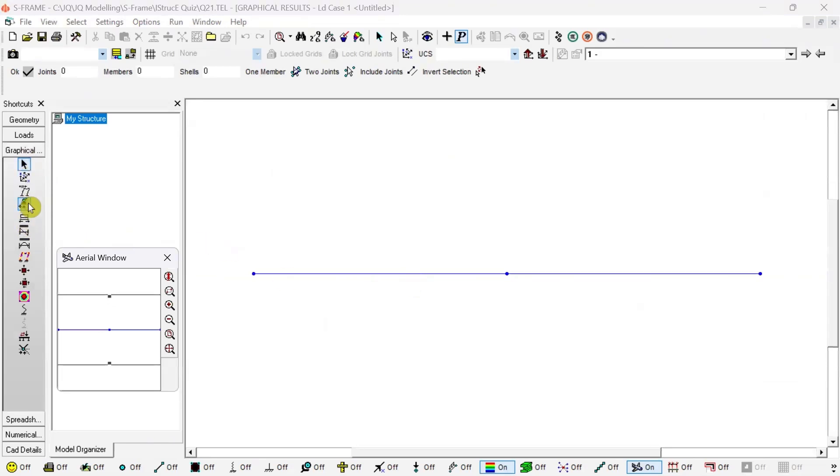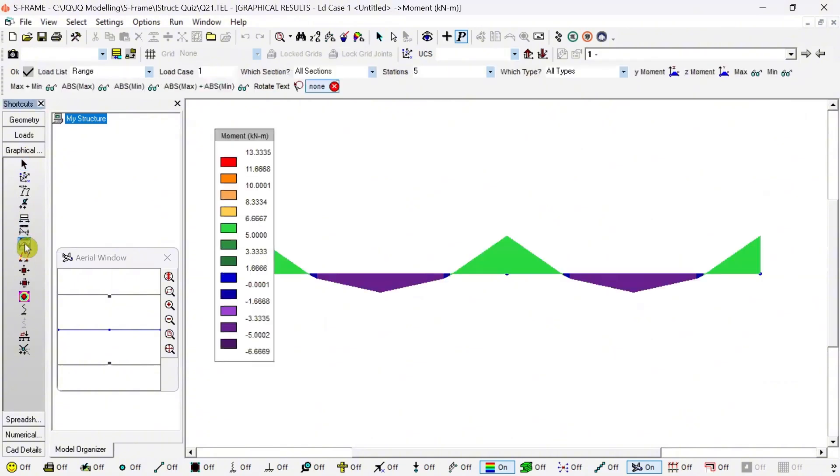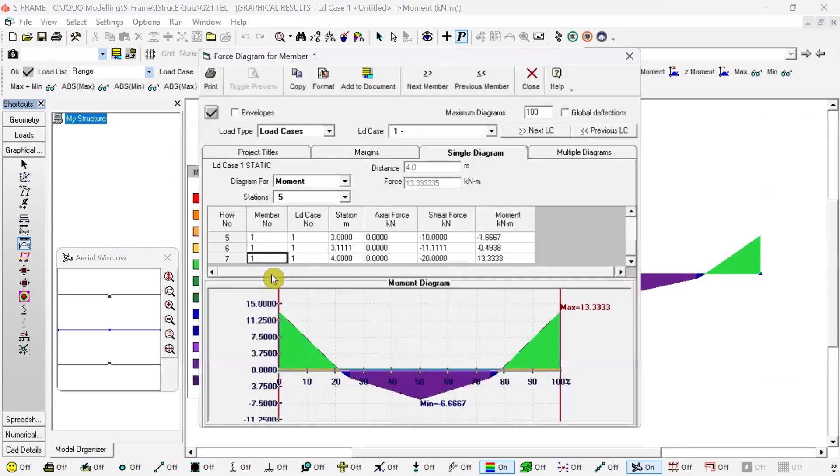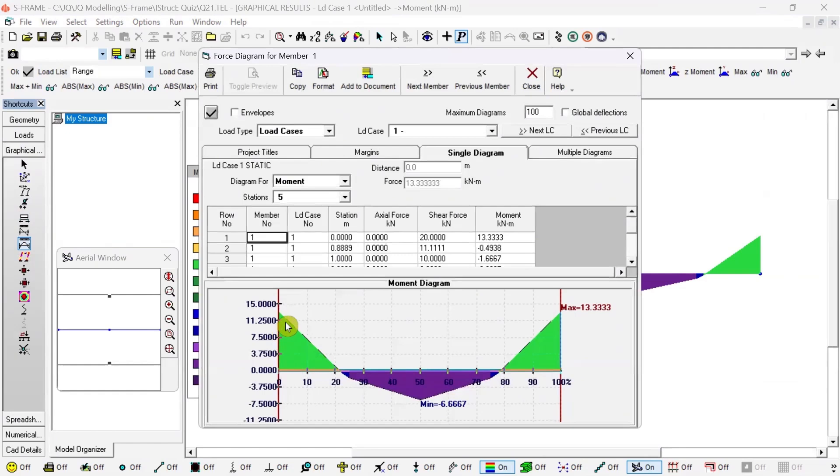I will directly go to the graphical results, and here I want to see the moment diagram. So click on Moment Diagram. Now the thing which I'm interested in is over here. If I double-click on this, it will show me the maximum value. You can see it is 13.33 at this point and 13.33—that is maximum hogging moment.